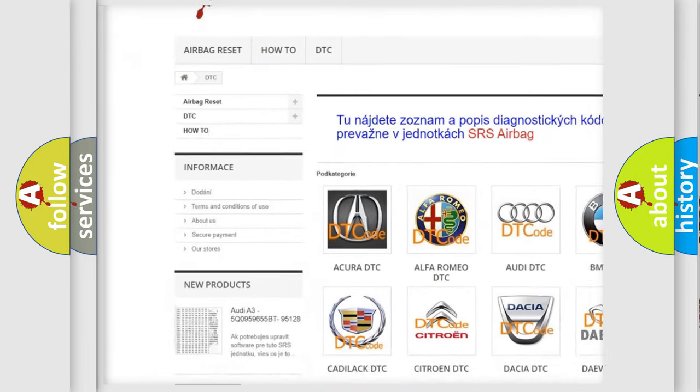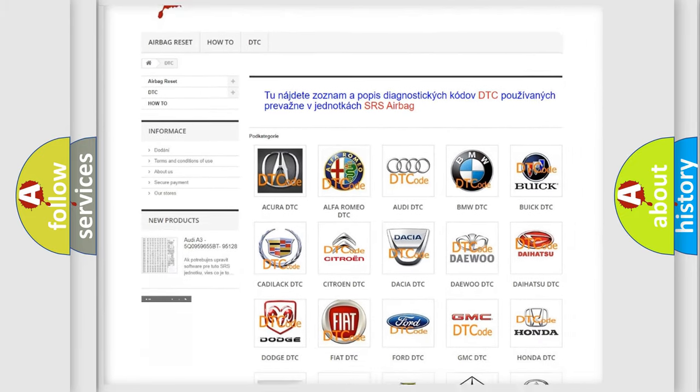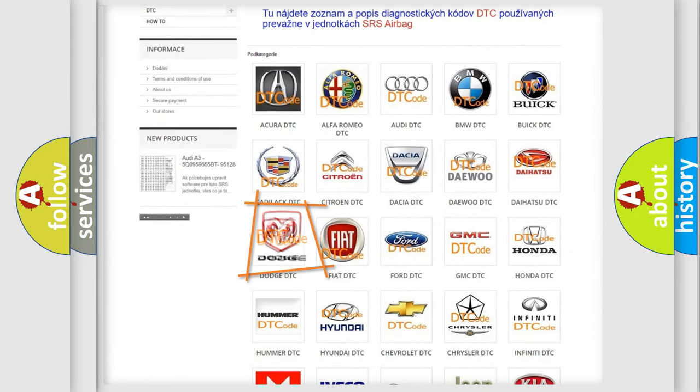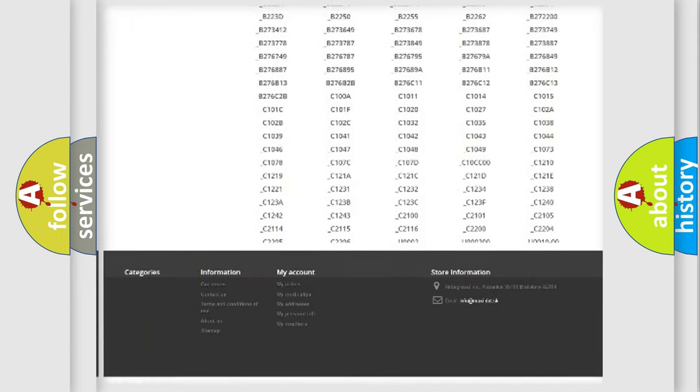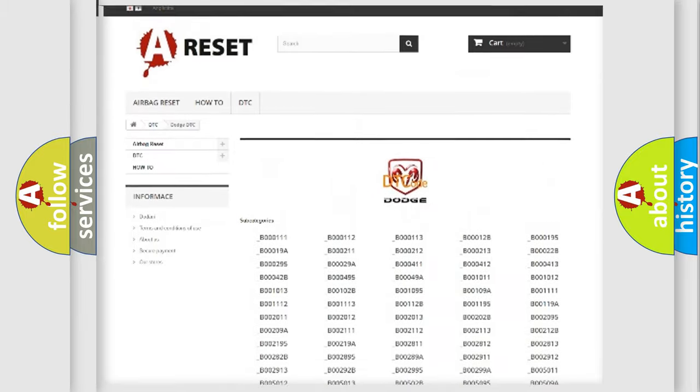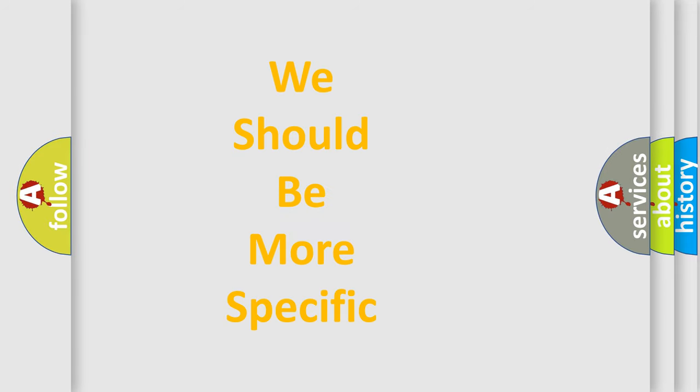Our website airbagreset.sk produces useful videos for you. You do not have to go through the OBD-II protocol anymore to know how to troubleshoot any car breakdown. You will find all the diagnostic codes that can be diagnosed in Dodge vehicles, also many other useful things. The following demonstration will help you look into the world of software for car control units.